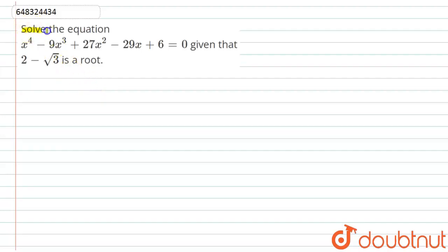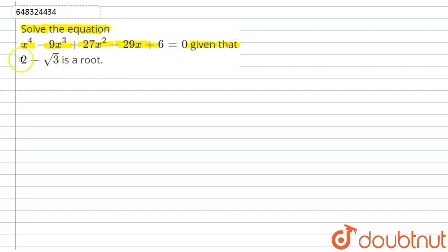Hello students. The question is: solve the equation x⁴ minus 9x³ plus 27x² minus 29x plus 6 equals 0, given that one root of this equation is 2 minus √3. So let us see the solution here.